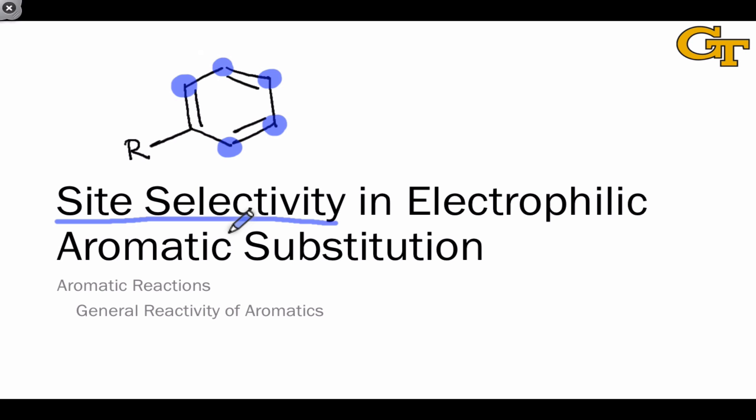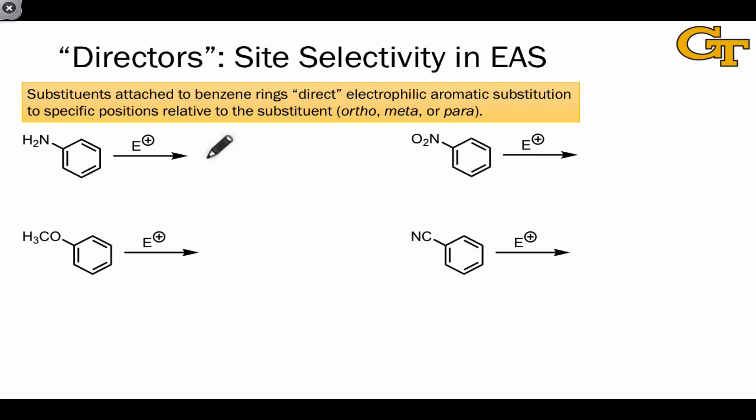Using resonance and a careful evaluation either of the starting aromatic or the sigma complex that results after coordination of the electrophile, we can see why certain sigma complexes are favored over others. Let's start with some interesting observations of electrophilic aromatic substitutions of different substituted benzenes.